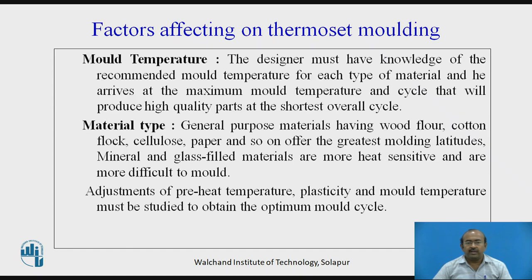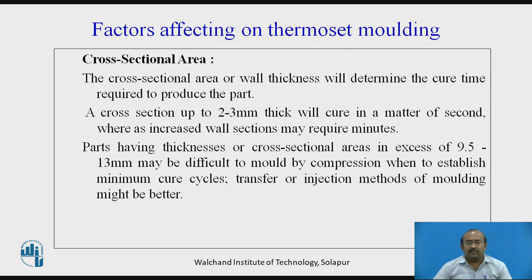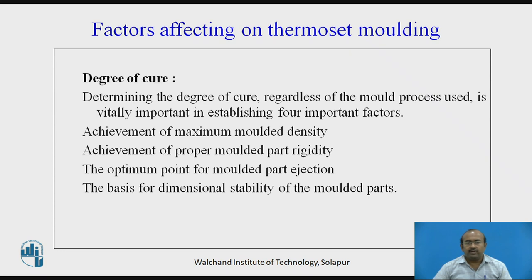The designer must have knowledge of the recommended mold temperature for each type of material and must arrive at the maximum mold temperature and cycle that will produce a high-quality part at the shortest overall cycle. Plasticity and mold temperature must be studied to obtain the optimum mold cycle. Cross-section area or wall thickness will determine the cure time required — parts having a thickness or cross-section area in excess of 9.5 to 13 mm may be difficult to mold by compression; transfer or injection methods might be better. Degree of cure involves: achievement of maximum molded density, proper molded part rigidity, the optimum point of molded part ejection, and dimensional stability of molded parts.